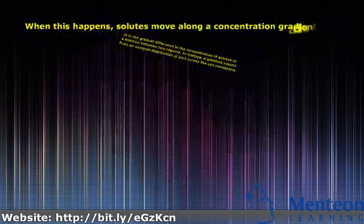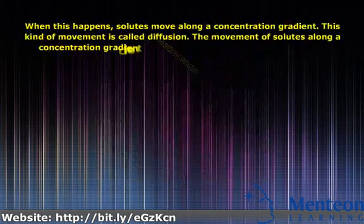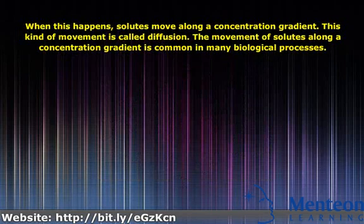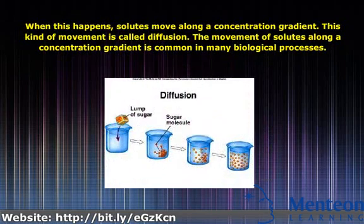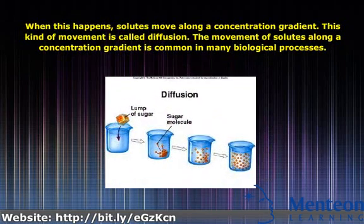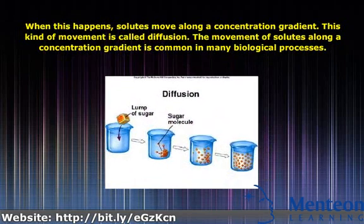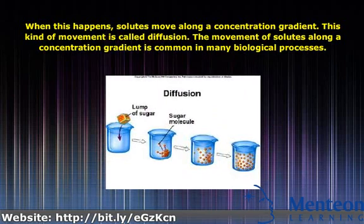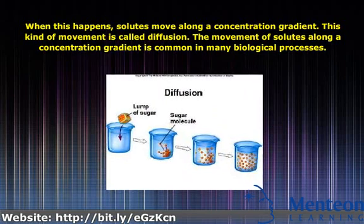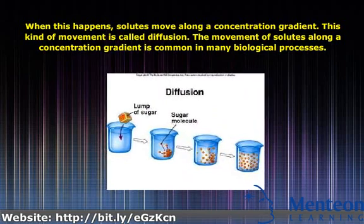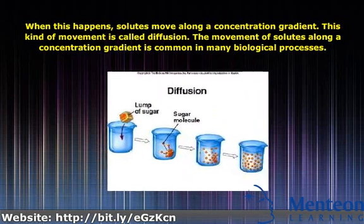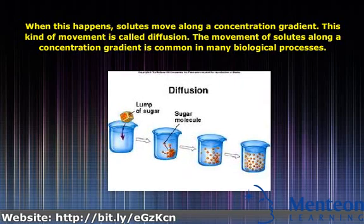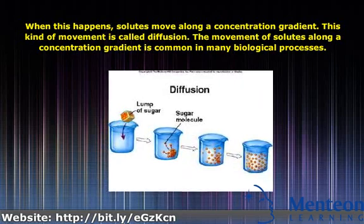When this happens, solutes move along a concentration gradient. This kind of movement is called diffusion. The movement of solutes along a concentration gradient is common in many biological processes.